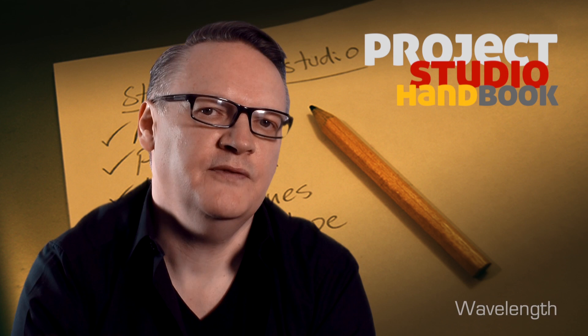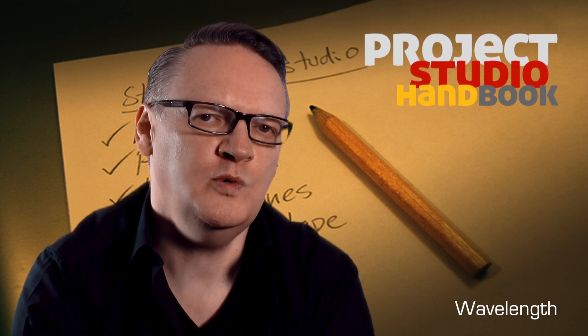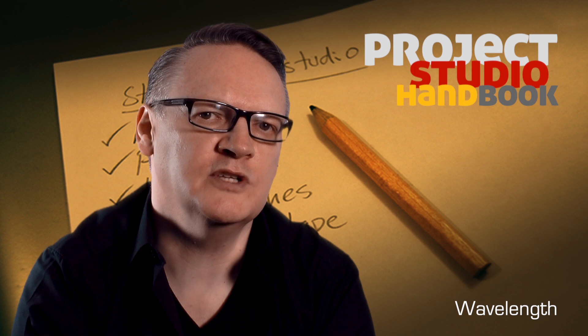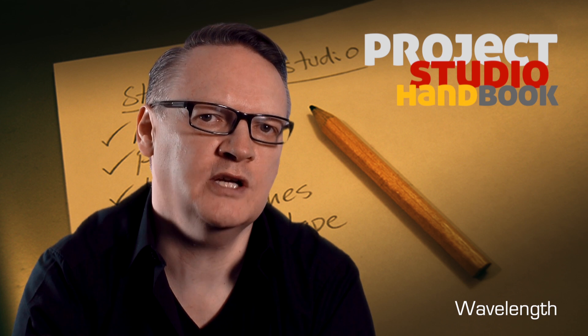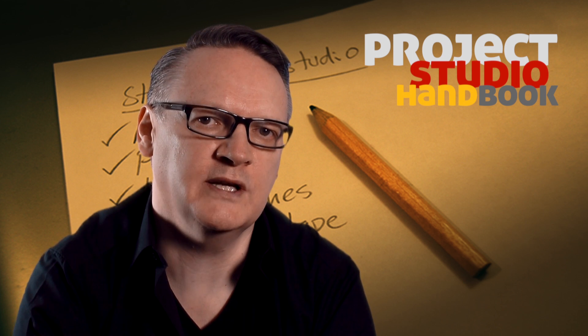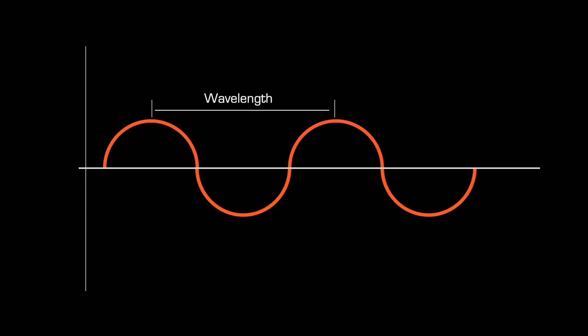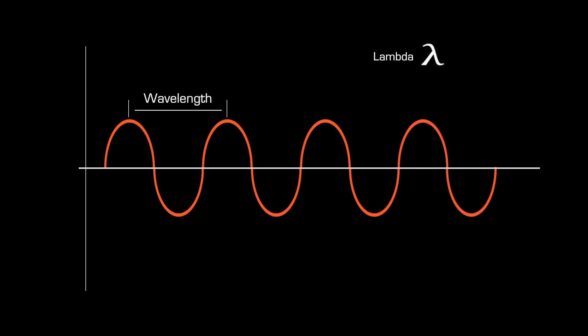The physical distance between two adjacent points on two cycles of a sound wave is called the wavelength and is denoted by the Greek letter lambda. Because a sound can vibrate at many different speeds or frequencies, this wavelength is variable.